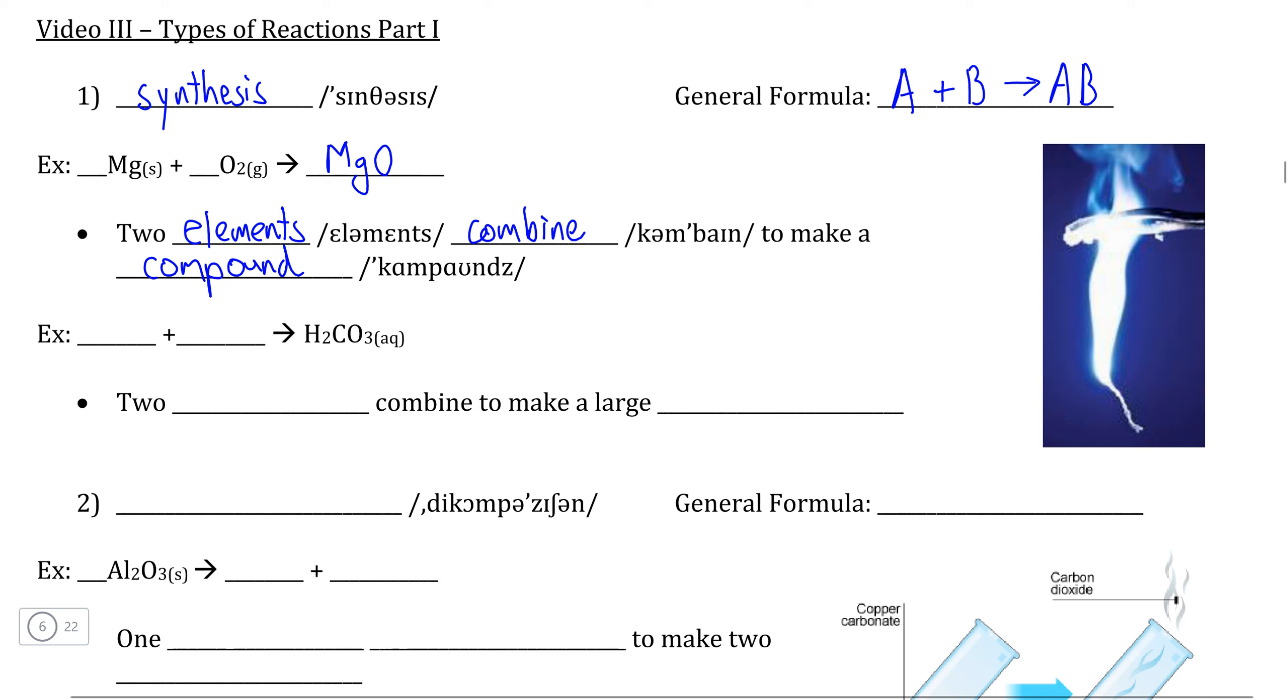Now, if we take a look at the second example of a synthesis reaction here, this one looks a little bit different and doesn't follow our rule exactly. In this reaction, we are going to be reacting liquid water with carbon dioxide gas in order to produce an acid, H2CO3.